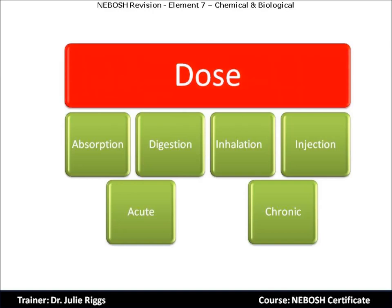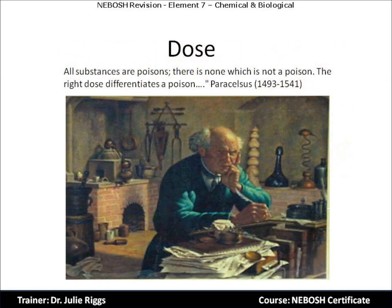Let's begin by looking at dose. A substance can produce the harmful effects associated with its toxic properties only if it reaches a susceptible biological system within your body in a sufficient concentration — i.e. a high enough dose. The toxic effect of a substance increases as the exposure or dose to the susceptible biological system increases. For all chemicals there is a dose-response curve, ranging from no effect to a 100% toxic response.